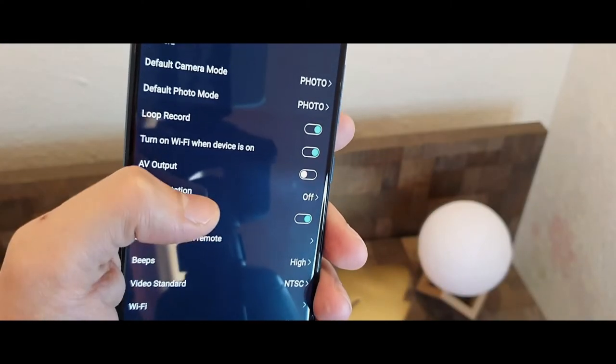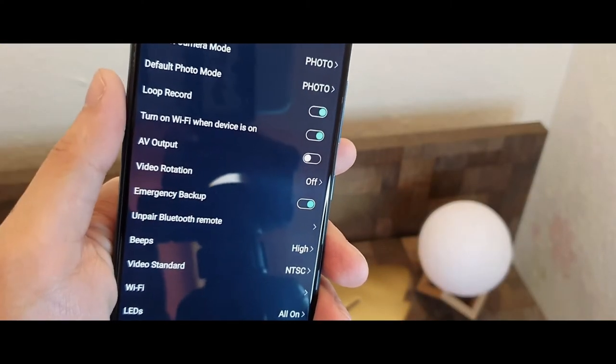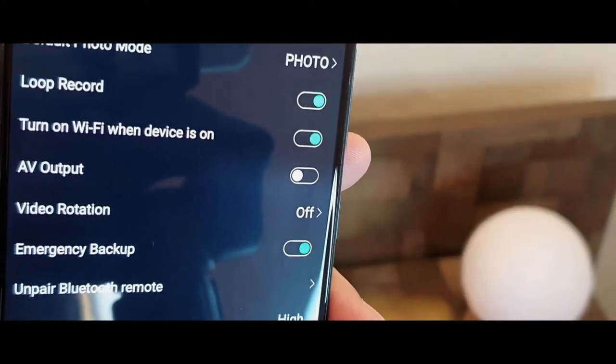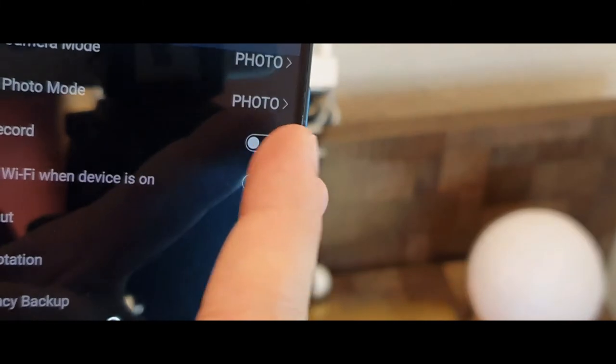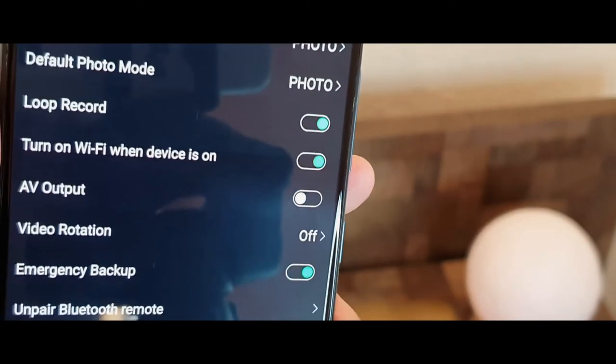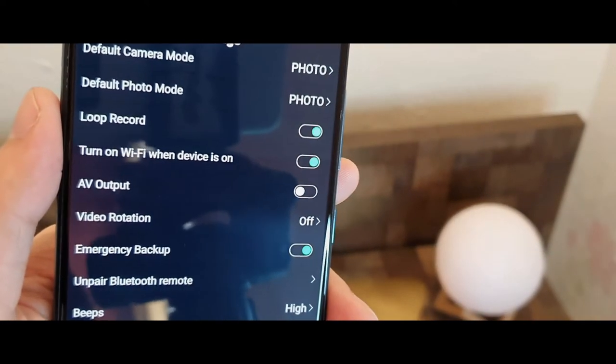Since it's a wireless camera, I went into settings and turned on the loop video recording. What loop video recording really does is it deletes the old footage and makes a new one, because of which you don't have to come every day and delete the old footage and start recording again.